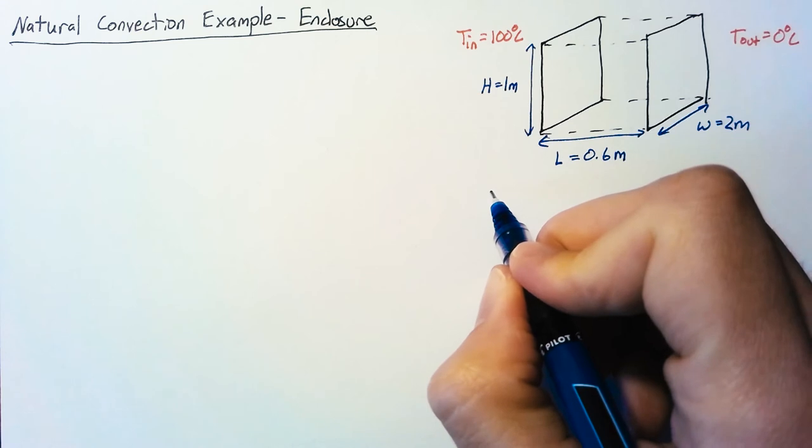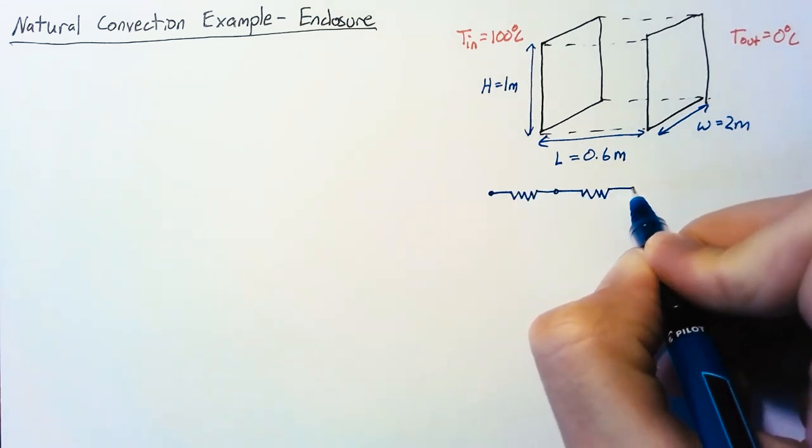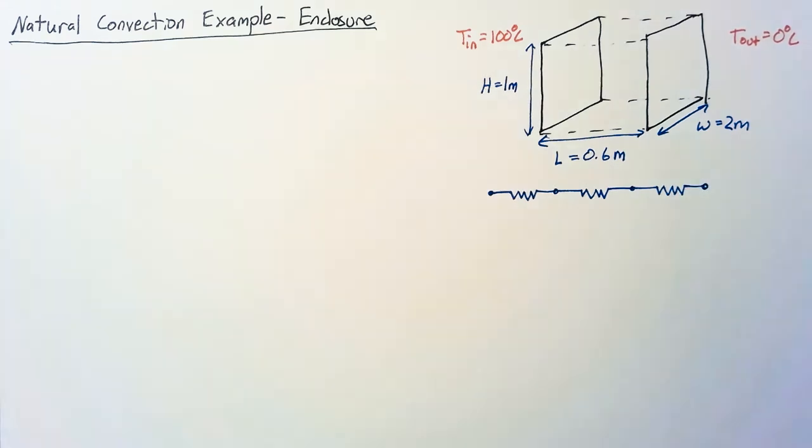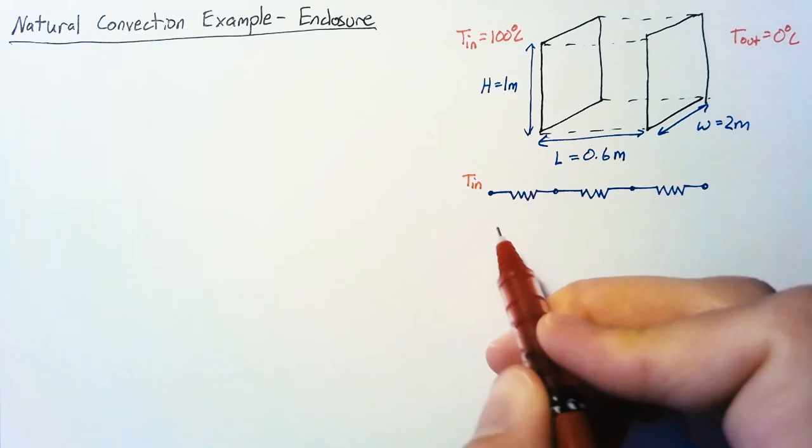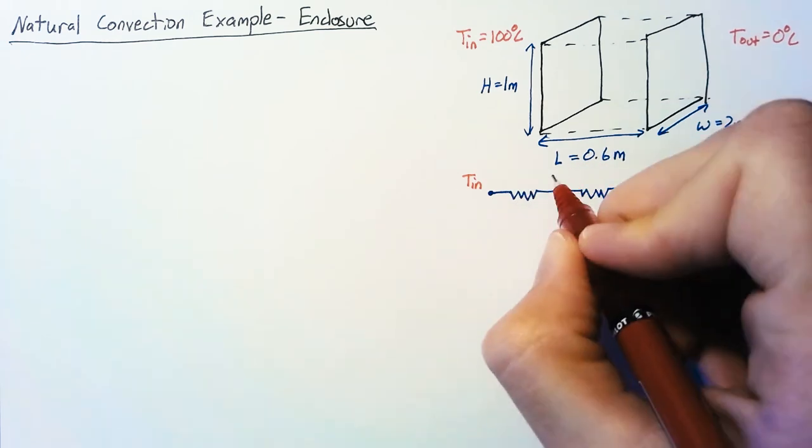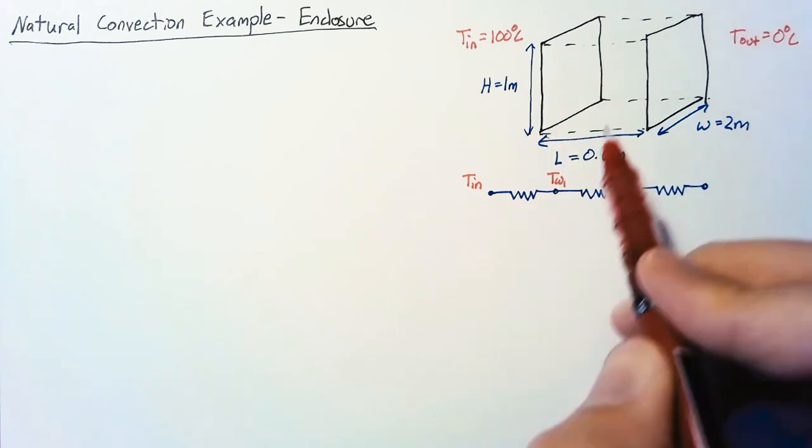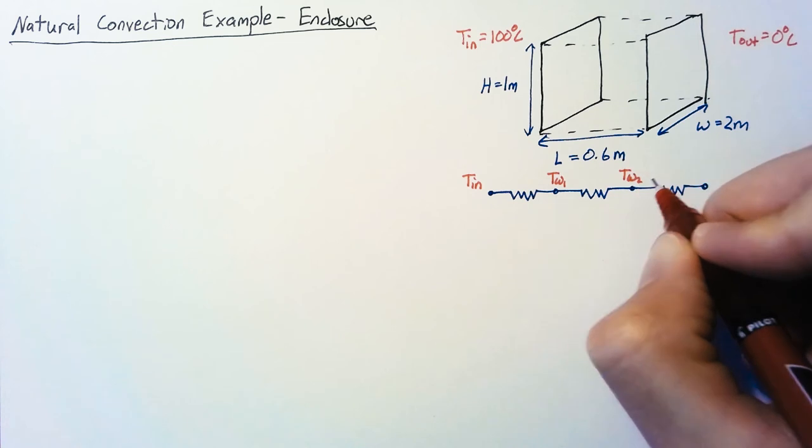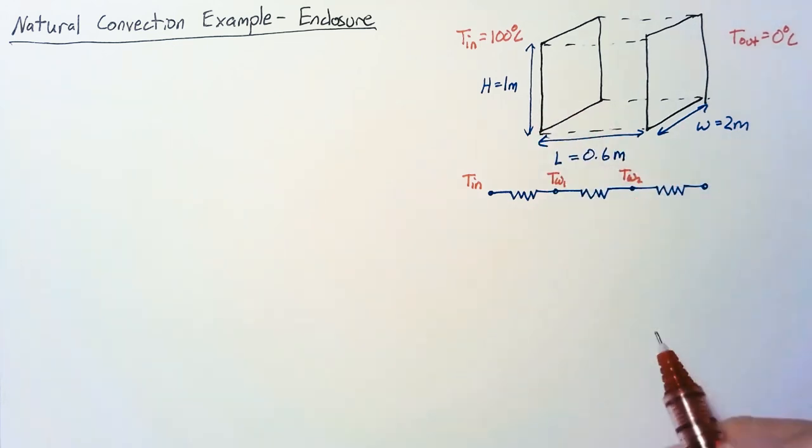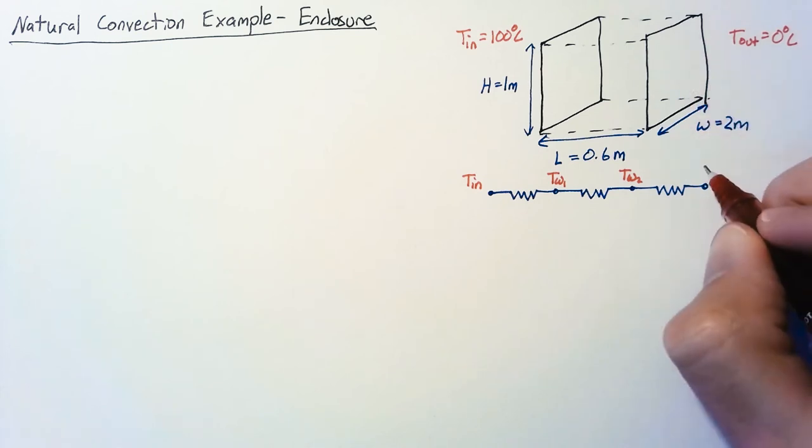So if we were to draw a resistive diagram of this problem we would actually need to account for three different resistances. This first resistor is going to be the thermal resistance between the air temperature of T_in and the temperature of the actual wall on the left hand side. So this wall on the left is at this temperature T_W1. Then we're going to have that central resistor as the enclosure resistance between these two walls. And then finally we're going to have natural convection again on the right side between that right wall and T_out.